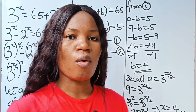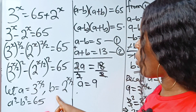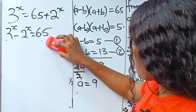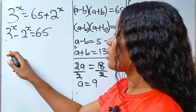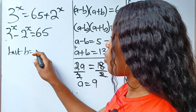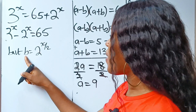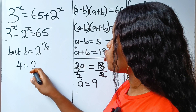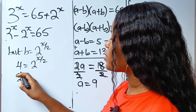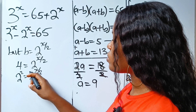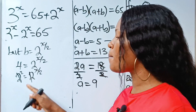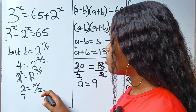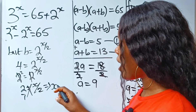Similarly, let's use b to solve for x. Recall that b is equal to 2 to the power of x over 2, and we found b to be 4. So we write 4 is equal to 2 to the power of x over 2, which means 2 squared is equal to 2 to the power of x over 2. Since they have the same base, equate the powers: 2 is equal to x over 2. Cross-multiplying, we still get x equal to 4.